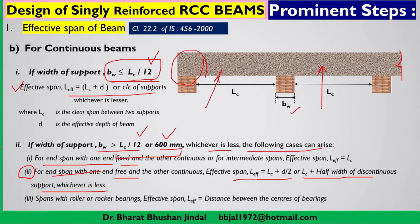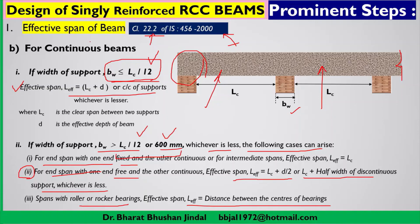The third case is when the span has a roller or rocker bearing, where L_effective is taken as the distance between the centers of the bearings. In summary, to calculate the effective span we refer to clause 22.2 of IS 456, which covers different types of beams — simply supported, continuous, and cantilever. Depending on the design problem and beam type, we refer to clause 22.2 to determine the effective span first.